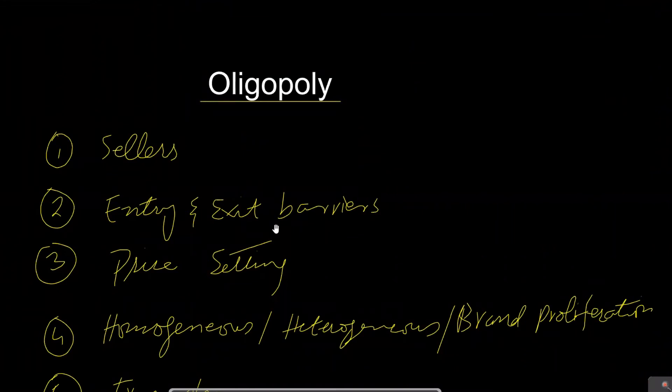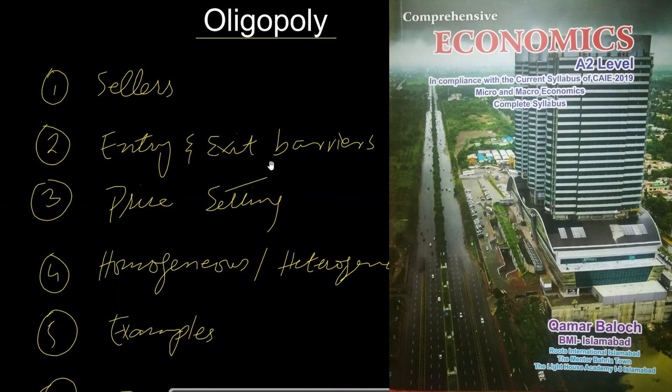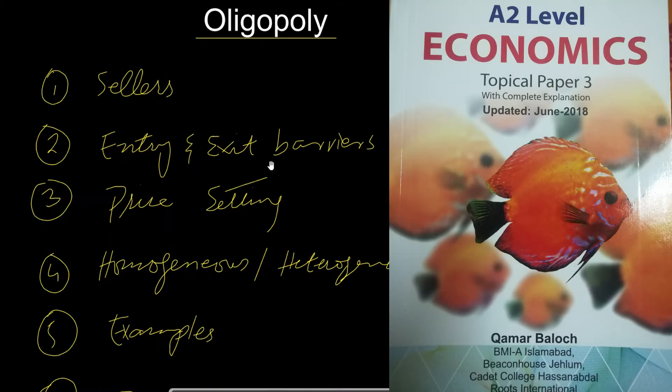Hello everybody. The topic I'm going to explain today is oligopoly. Before explaining this topic, I would suggest all of you to bring three main important books for A2 level economics. When you study sitting at the table, you must have these three books: number one is Comprehensive Economics A2 Level, which includes micro and macro, and the second book is Topical Paper 3.